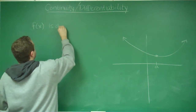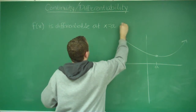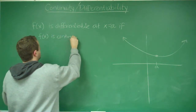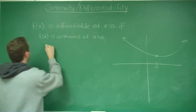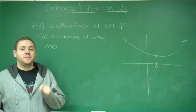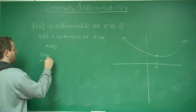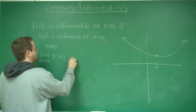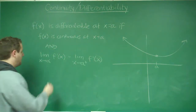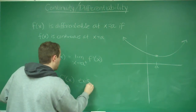f(x) is differentiable at x equals a if: first, f(x) is continuous at x equals a. And the other condition for differentiability, other than that it has to be continuous, is that the limit of the derivative has to be the same from the left and the right. The limit as x approaches a from the left of f′(x) has to equal the limit as x approaches a from the right of f′(x), which implies that the limit as x approaches a of f′(x) exists.